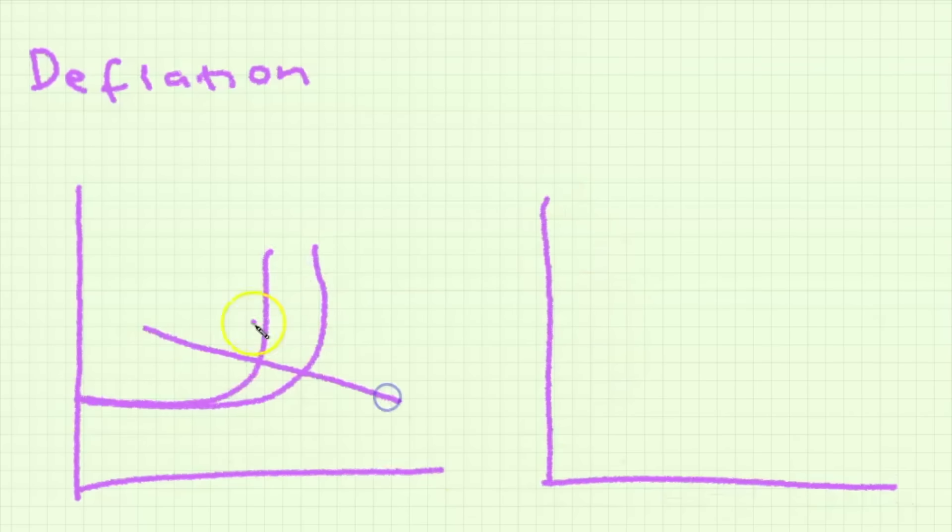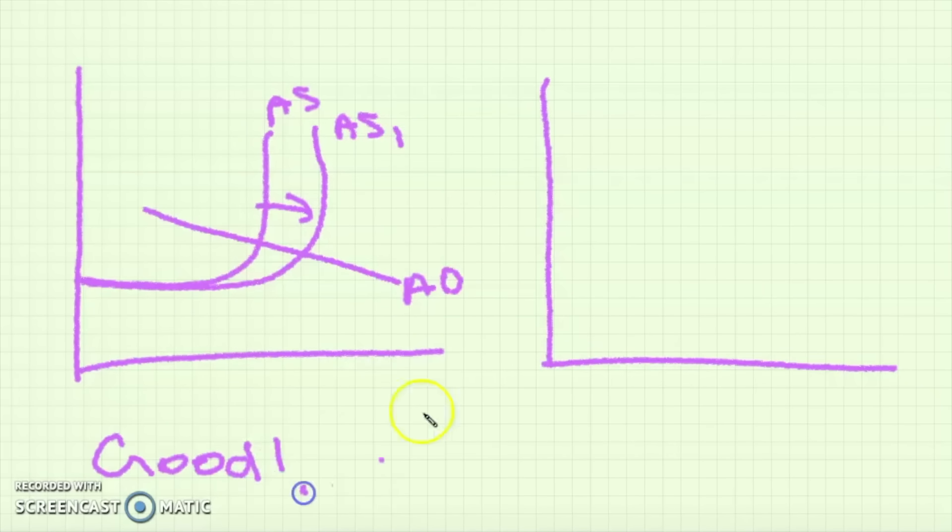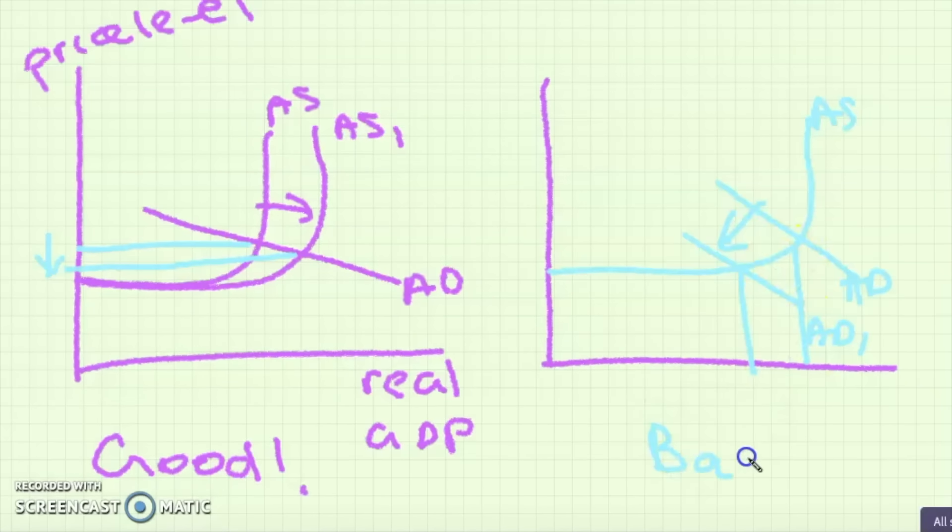Deflation is a decrease in the price level and can be good or bad. Good deflation happens as a result of AS shifting to the right and it also increases real GDP. But there's also bad deflation which happens when there's a decrease in AD and a decrease in the price level.